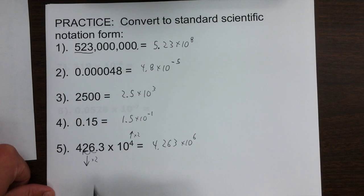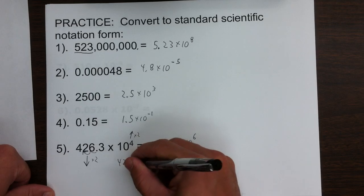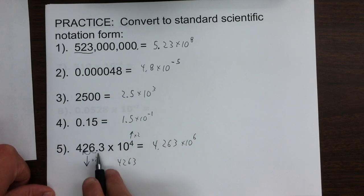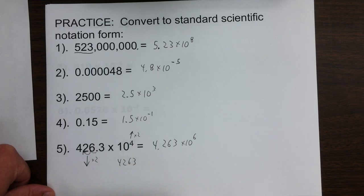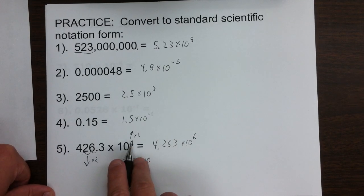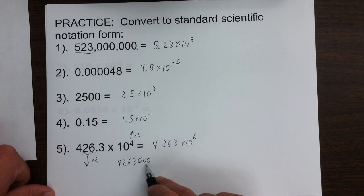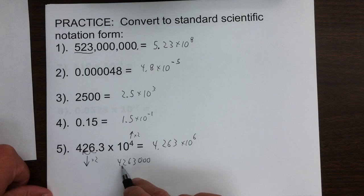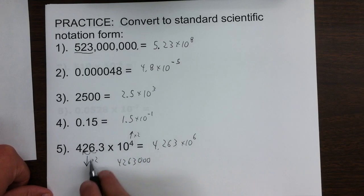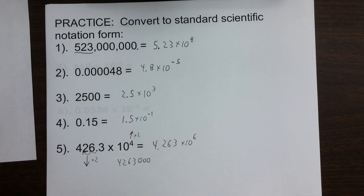So this would be 4.263 times 10 to the 4 plus 2, which is 6, giving 4.263 times 10 to the 6th. If you have trouble seeing that, you could just write it out into regular form: 4.263, moving the decimal 1, 2, 3, 4, 5, 6 places. After you write it out, you could convert it into standard scientific notation, confirming the coefficient is 4.263 times 10 to the 6th. Either way is fine; doing the direct adjustment will save you some time.